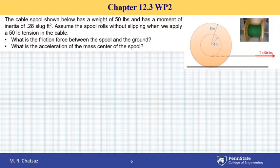Welcome to another example of rigid body motion. Here we have a cable spool whose weight is 50 pounds and has a mass moment of inertia of 0.28 square foot. A force of 50 pounds is applied to the cable as shown, which causes the spool to roll without slipping, and we're interested in the friction force between the spool and the ground and also the acceleration of the mass center due to application of the force.